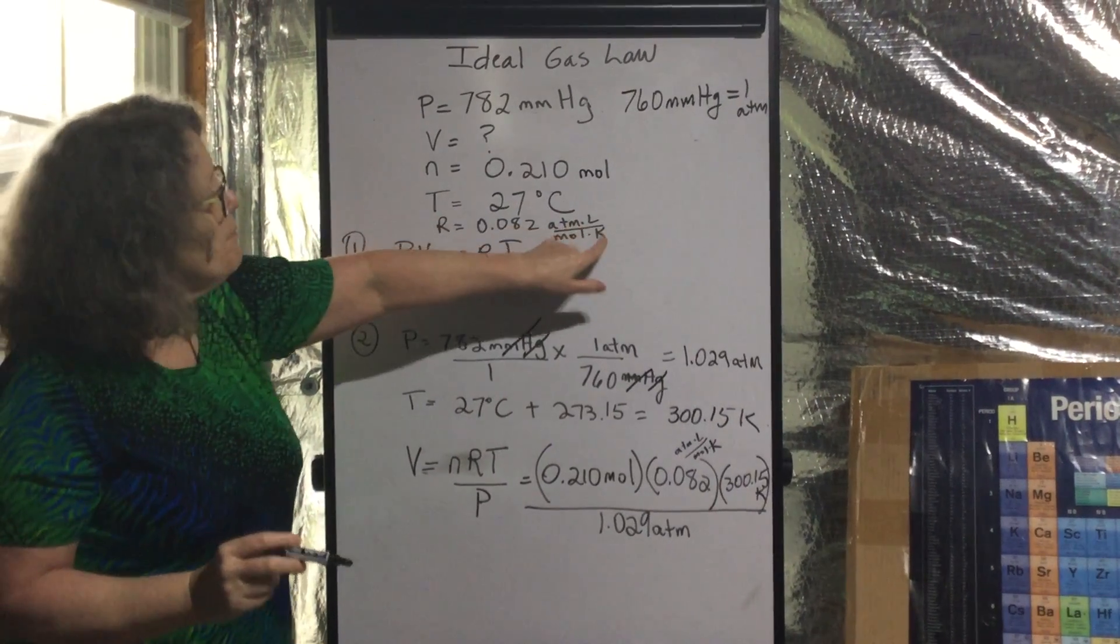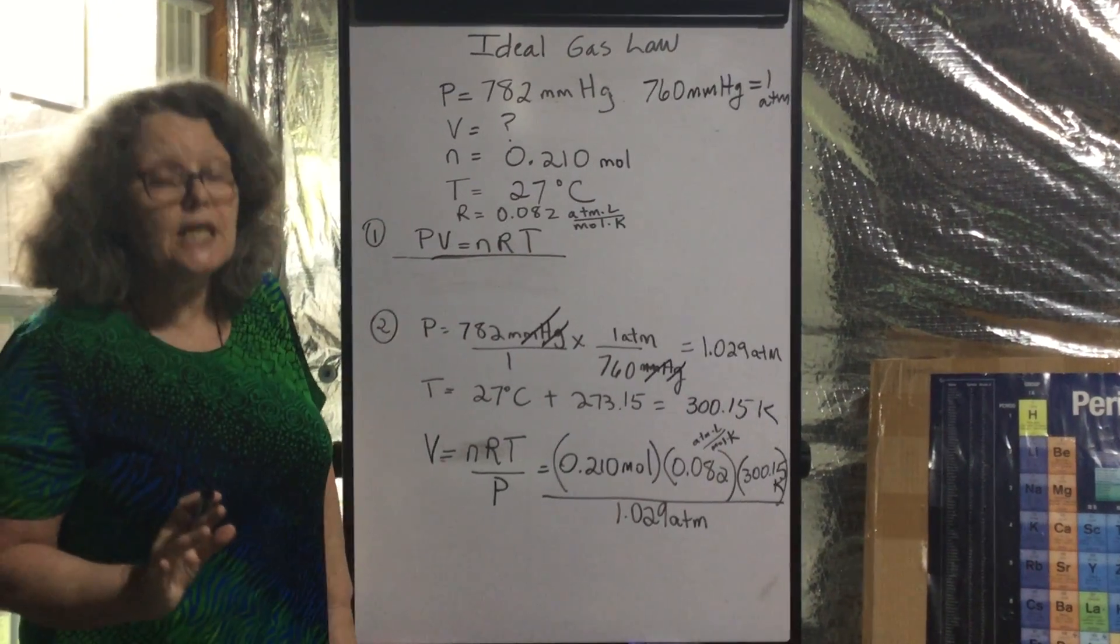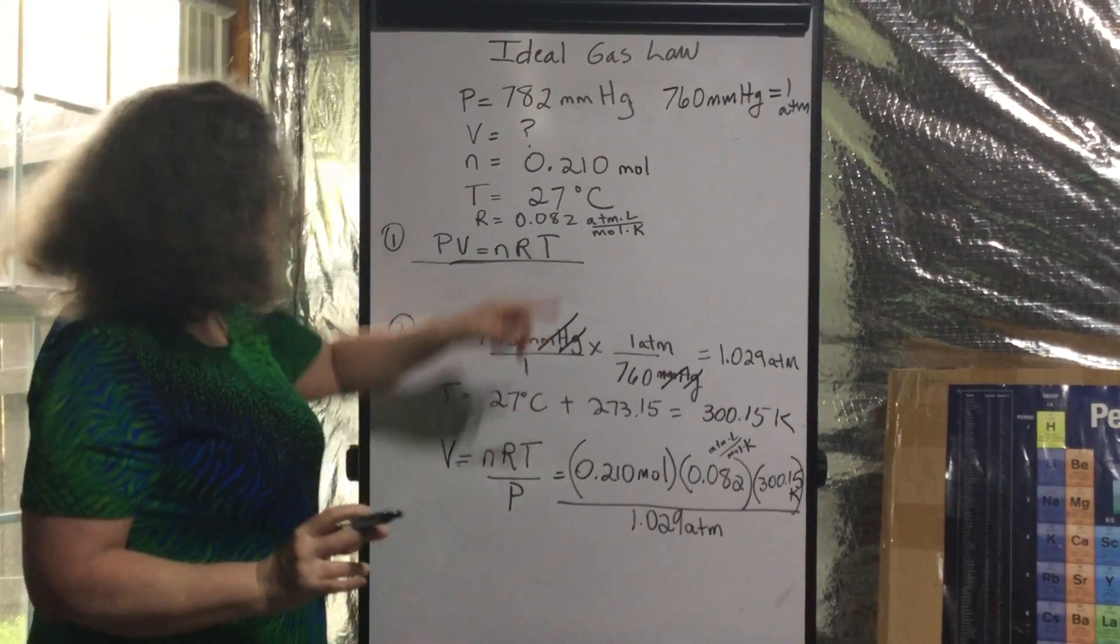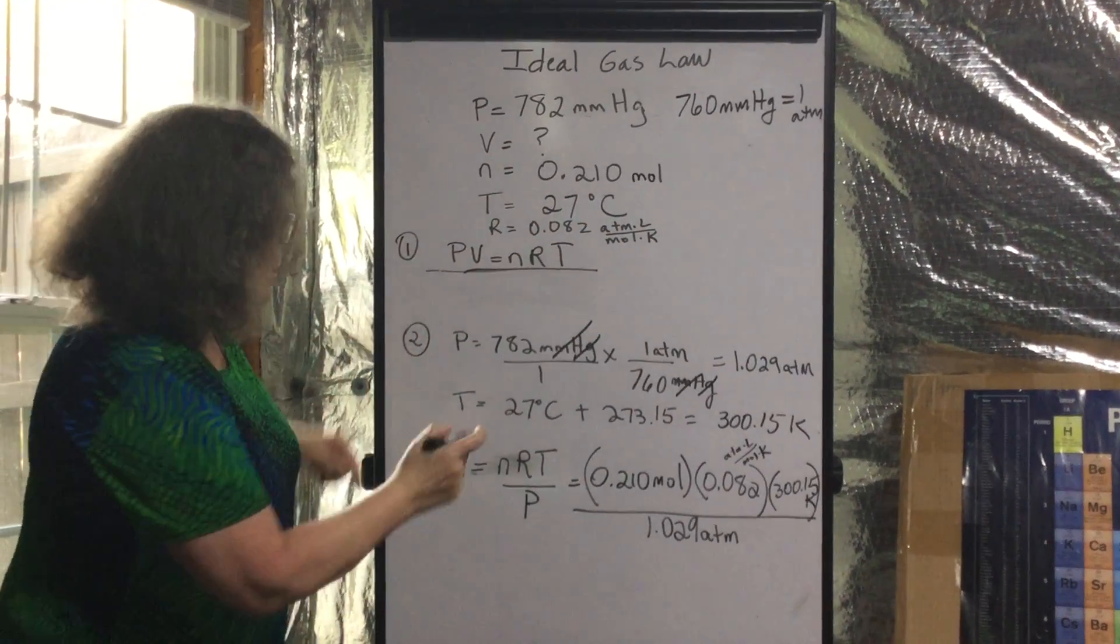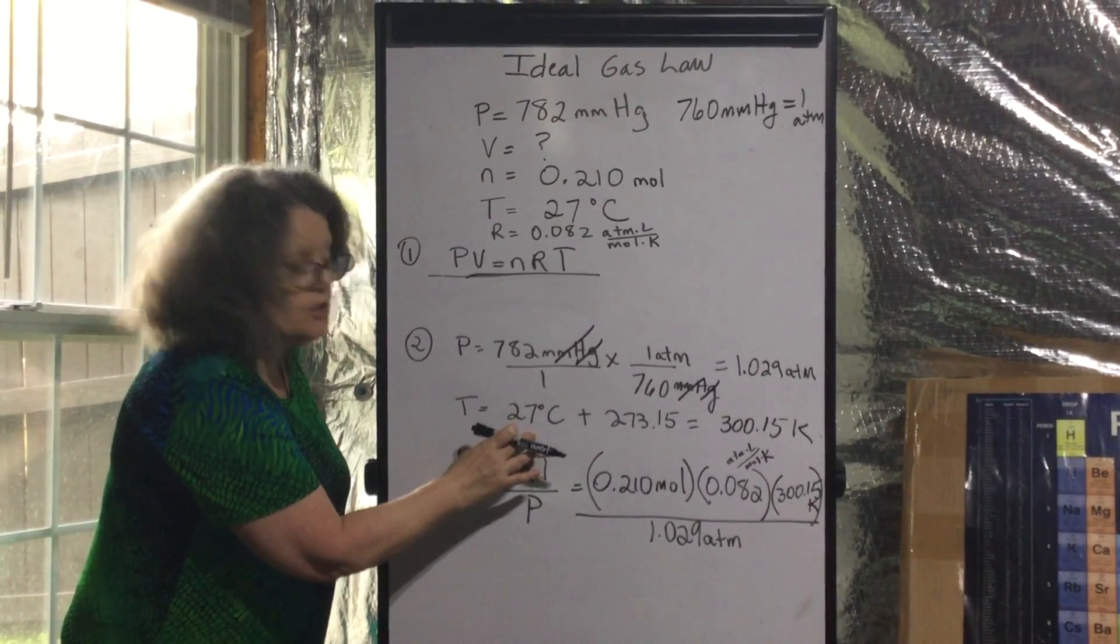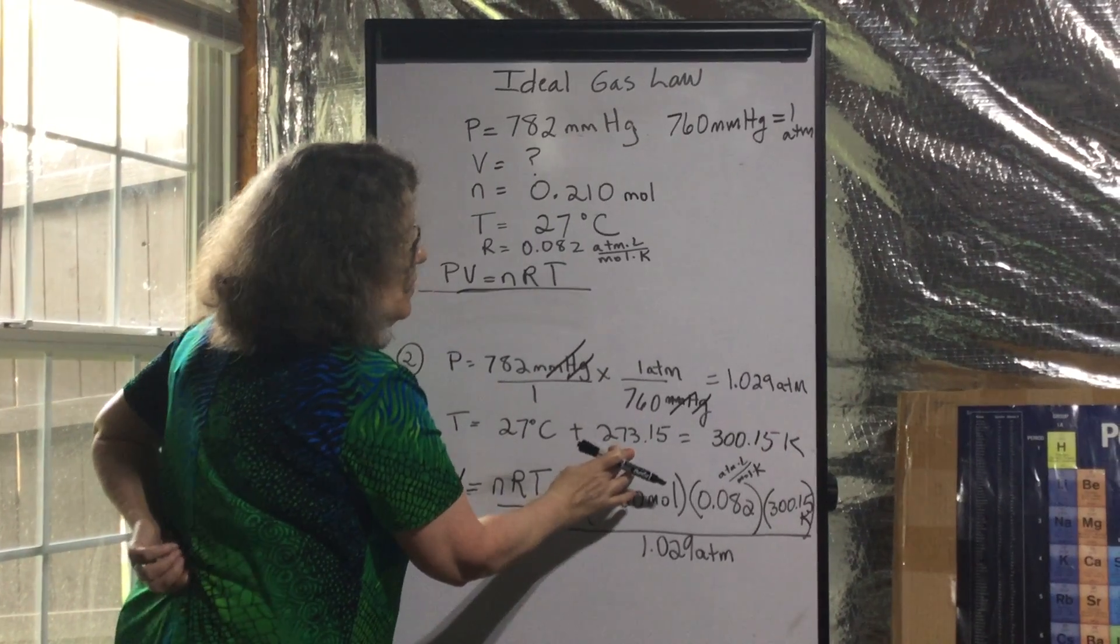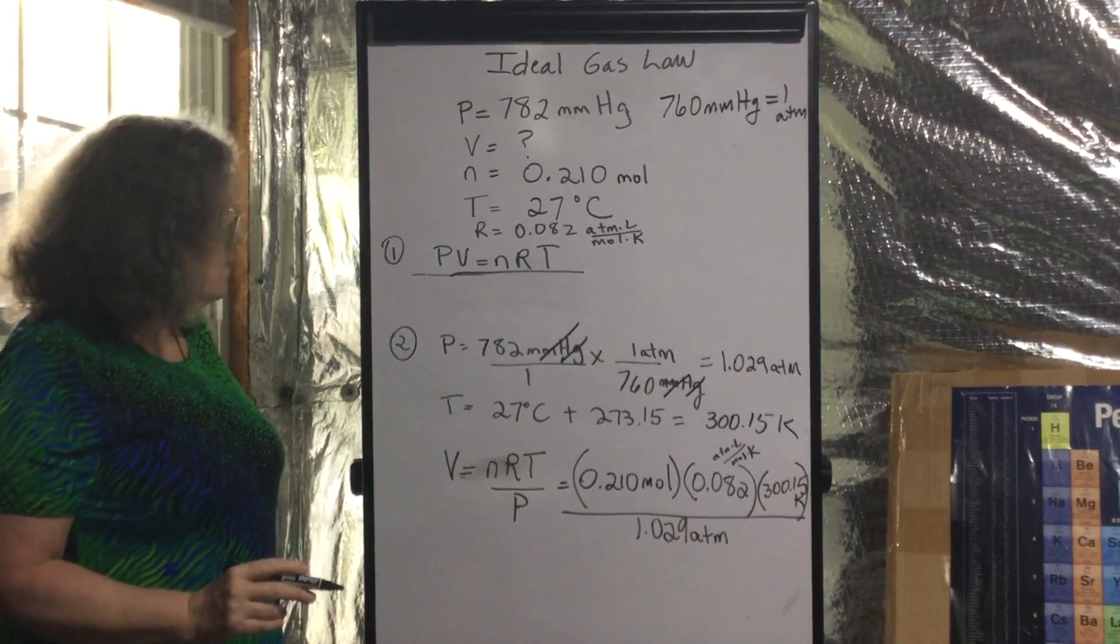Now, temperature must be always, always, always in Kelvins. Notice we don't say degree Kelvin. We say Kelvins. So we have 27 degrees Celsius, so we need to convert our temperature into Kelvins. So we take our degrees Celsius, add 273.15, we get our Kelvin temperature, 300.15. Now,